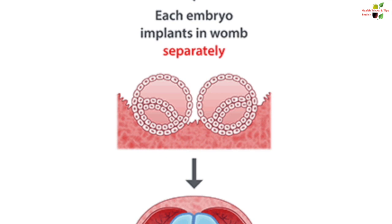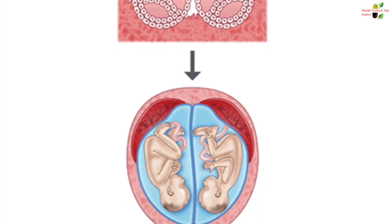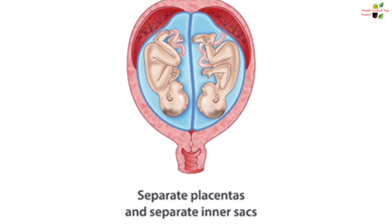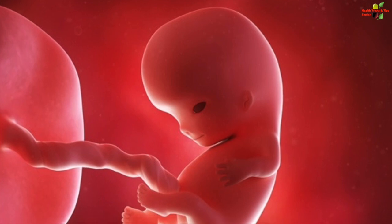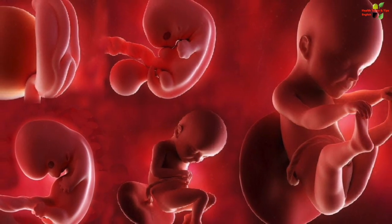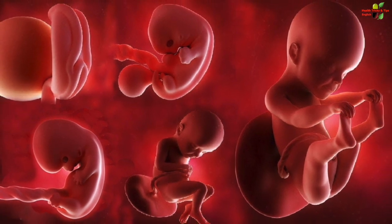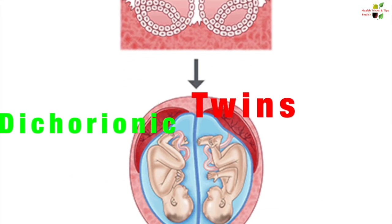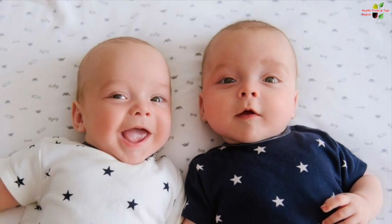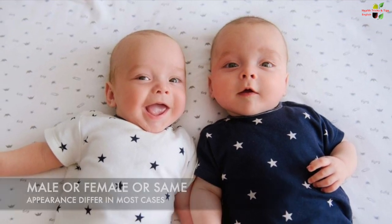Each of the embryos or zygotes implants in the womb as a separate entity. As the implantation is different, they would have different placenta, different amniotic sac, and via the placenta and the umbilical cord, the babies in the womb get their food, oxygen, and blood supply. So these types of twins are known as fraternal twins, or technically, as they are having two separate placentas, they are also known as dichorionic. Whether these twins are male or female cannot be said — they can be either or the same as well.